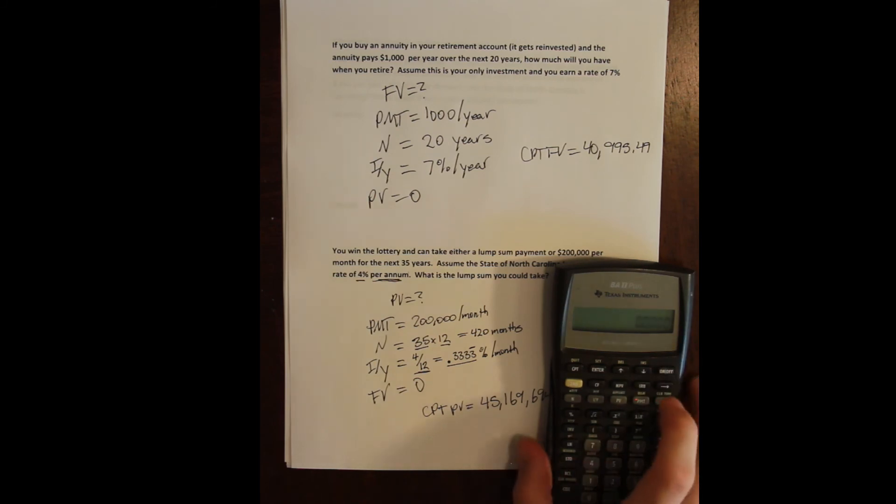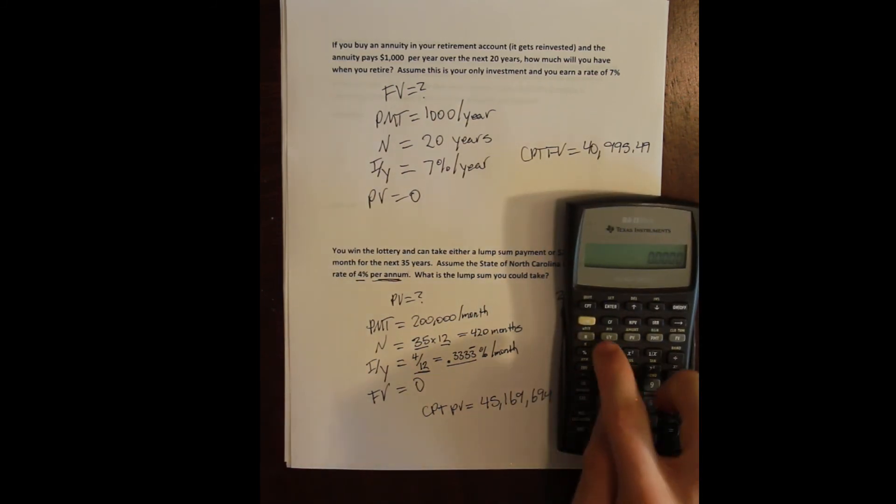So I actually, let me just show you that so it's clear here. We have $200,000 per month, this is our cash inflow, that's our payment.